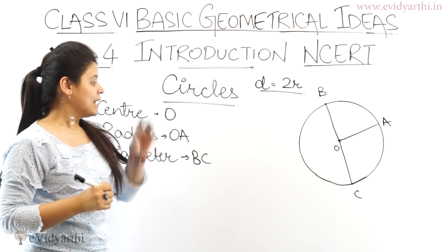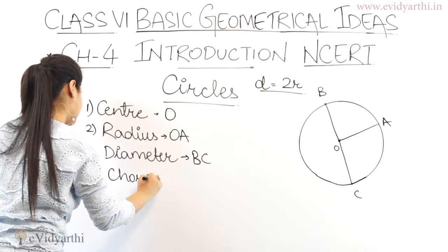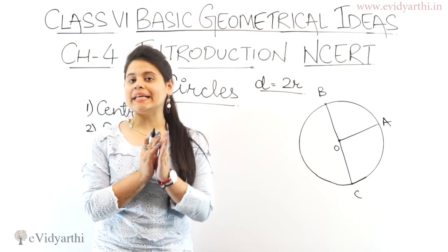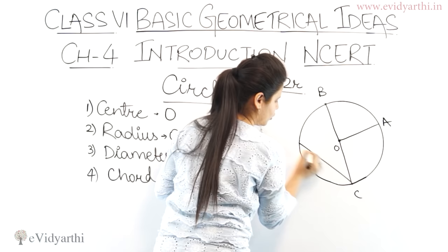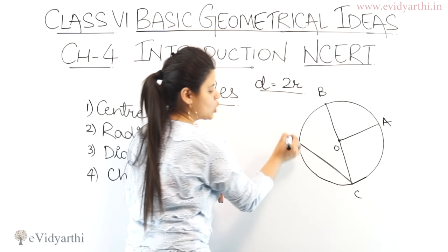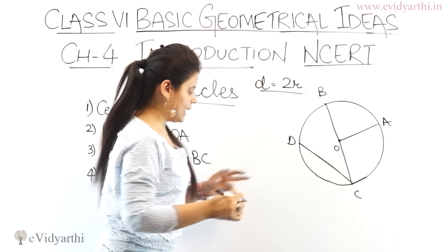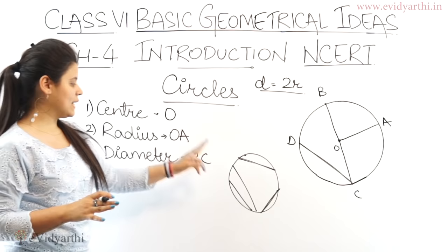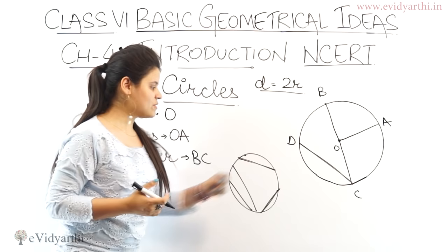The next thing is a chord. A chord is similar to a diameter, in that it connects two points on the circle, but a chord does not necessarily pass through the center. So if I draw a line connecting any two random points on the circle — even without passing through the center — that is a chord. For example, in this figure, DC is our chord.